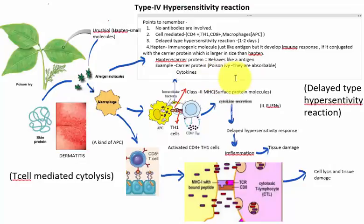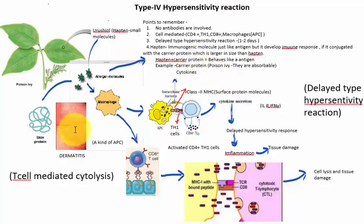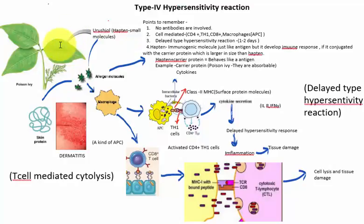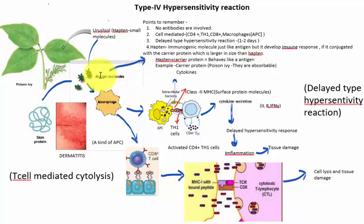An example is poison ivy — urushiol is a hapten protein. These are small molecules which, when they combine with the skin proteins, cause those skin proteins to behave like an antigen. In the leaves of the poison ivy plant, a toxic substance called urushiol is present. It is a kind of hapten which is very small in size. When a person comes in contact with the leaf, the urushiol forms a hapten-protein conjugate with skin proteins, which then behaves like an antigen — the allergen molecule.